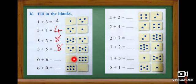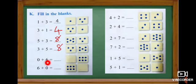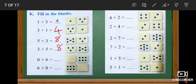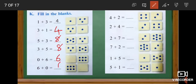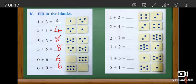Zero — nothing is there in this box. So they write zero plus how many stars? Six stars. Zero plus six — when we add a number with zero, we get the same number. The answer is six. Here also they change the order: zero plus six, and in the next they write six plus zero. The answer is six.